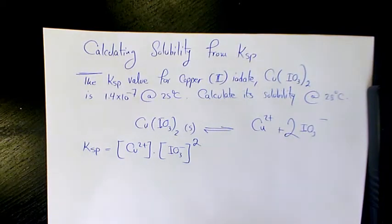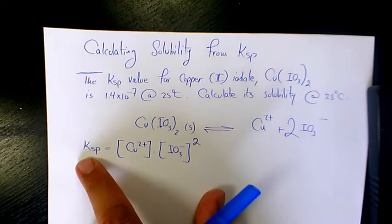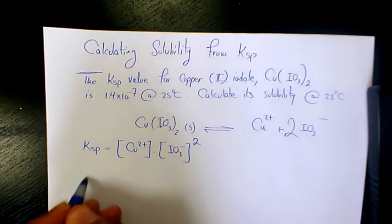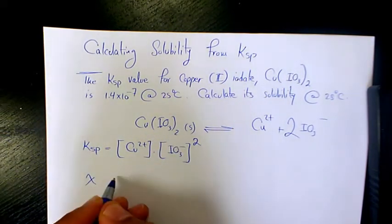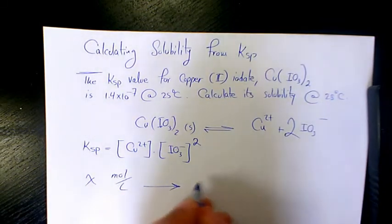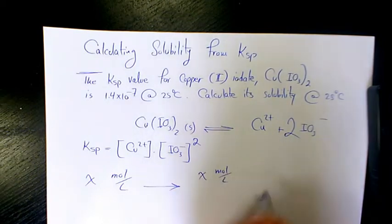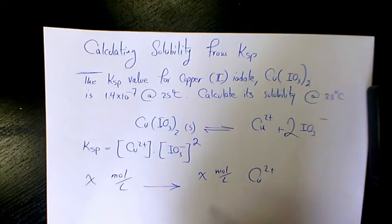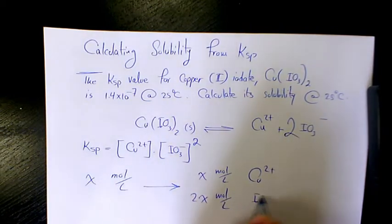Now we want to find out the solubility, so we need to use the Ksp. But before that, we can say if you assume that the solubility of Cu(IO3)2 is x mol/L, when it dissolves it's going to produce x mol/L of copper ion and 2x mol/L of iodate.